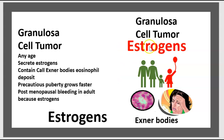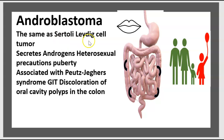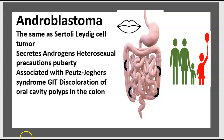To recap: granulosa cell tumor — think estrogen, Call-Exner bodies, and precocious puberty. After menopause, think of bleeding. Androblastoma, the same as Sertoli-Leydig cell tumor, secretes androgens with precocious puberty. It is associated with Peutz-Jeghers syndrome — discoloration of the oral cavity and colon polyps.